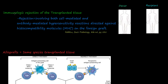In this video, we're going to discuss the immunological rejection of transplanted tissue. So let's say we have a donor patient and we have a recipient patient. The recipient patient has a bad heart — it's kind of worn out — and this donor has passed away or is about to die, but his heart is good.